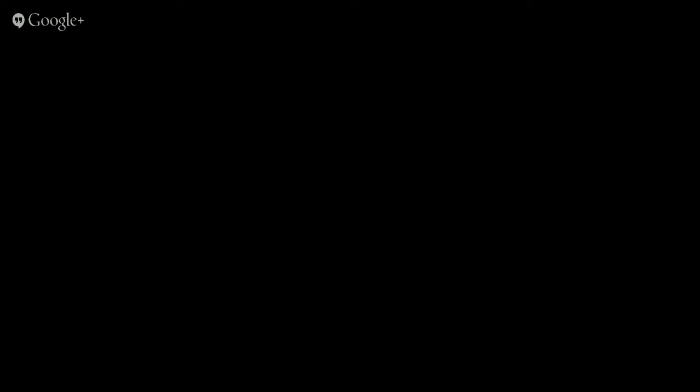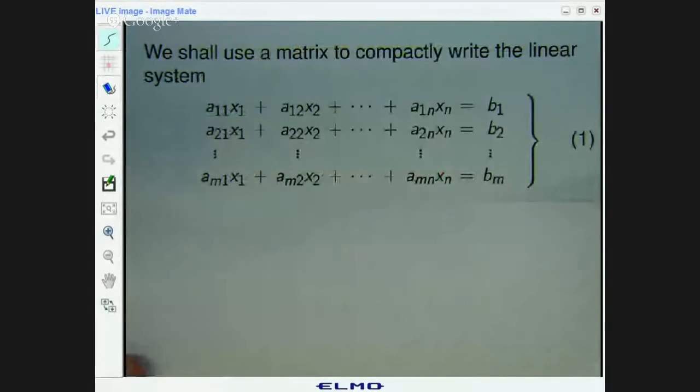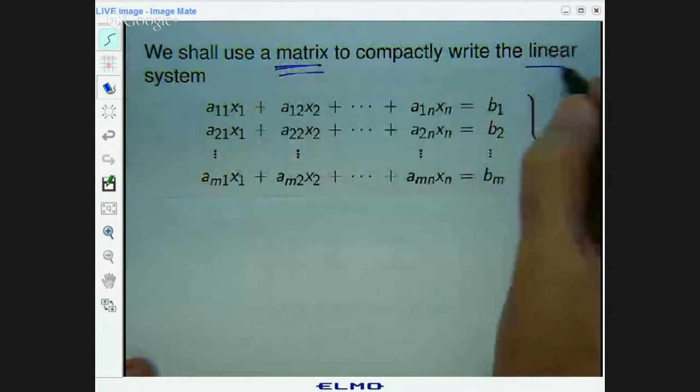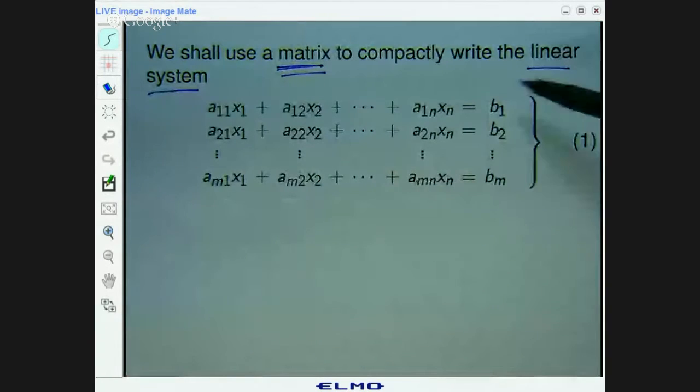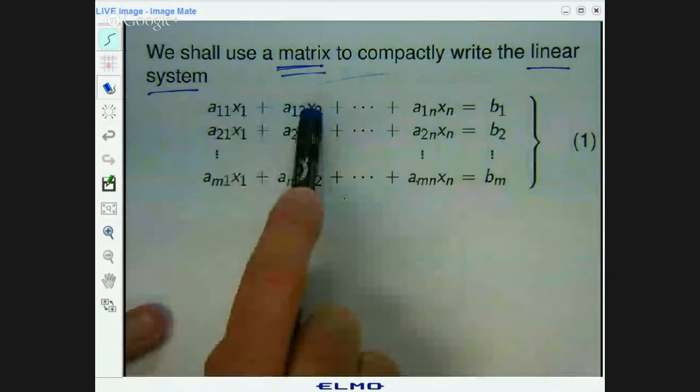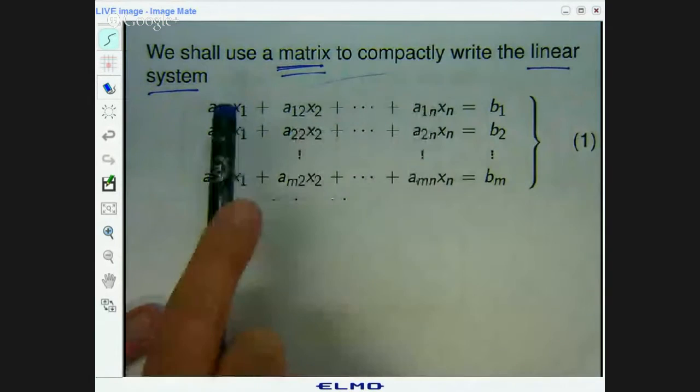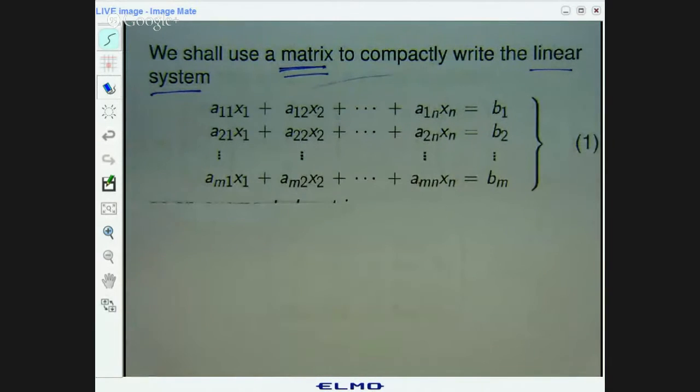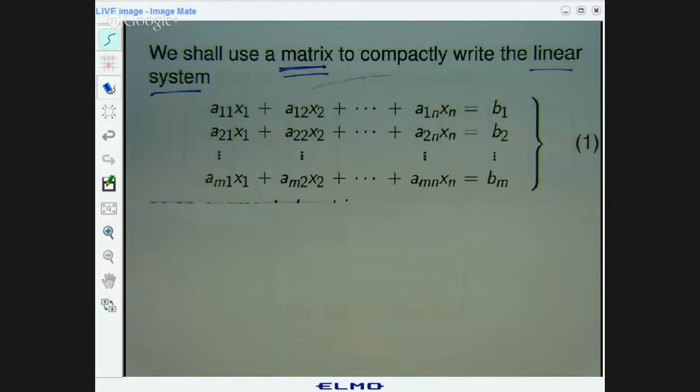Alright, so now don't get too shocked by the notation here. I'll do some simple examples in a minute. What we're going to do is use a matrix to compactly write the following linear system. So this looks like a whole jumble of stuff. But here, x1, x2, etc. are the unknowns. The coefficients, the a11, a21, etc., they're just numbers. And the b1, b2, etc. are just numbers.